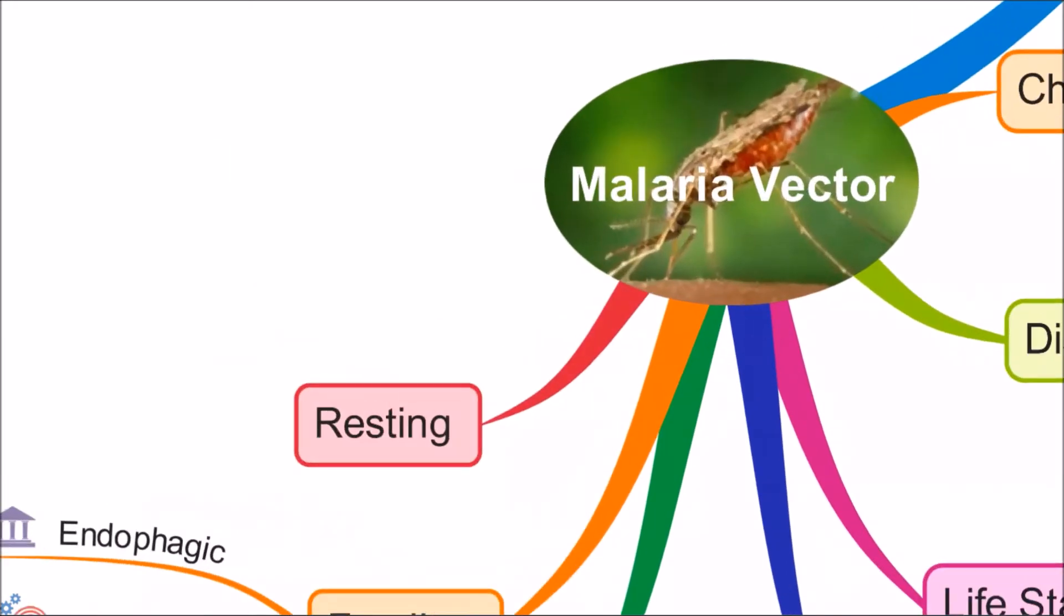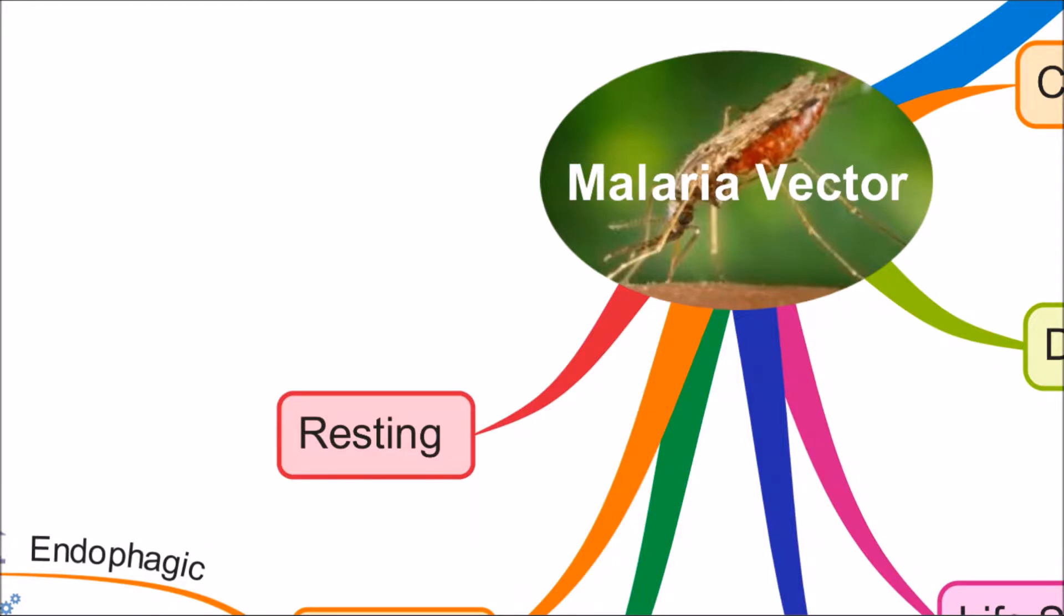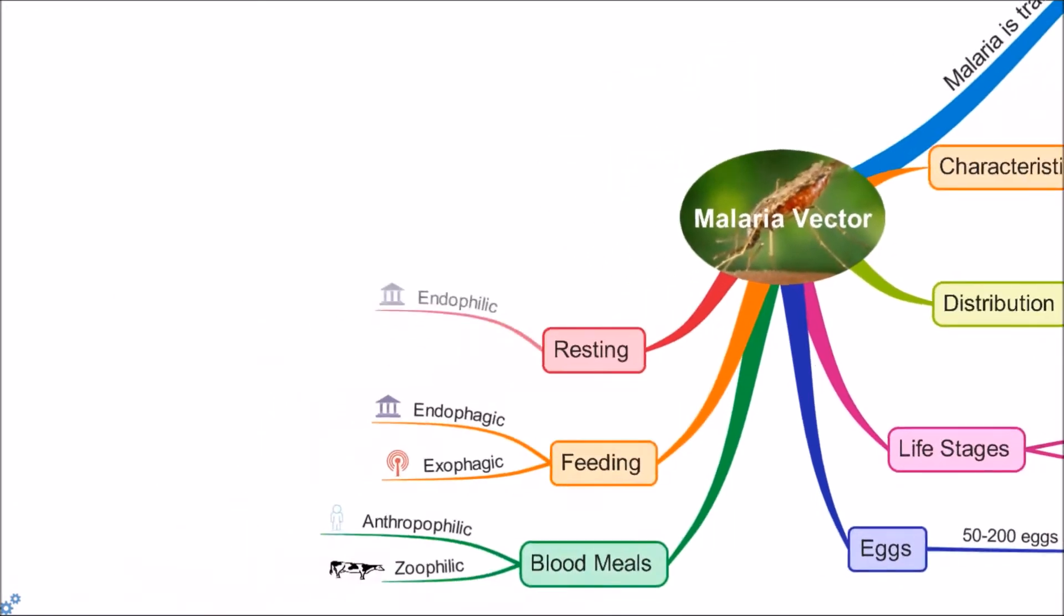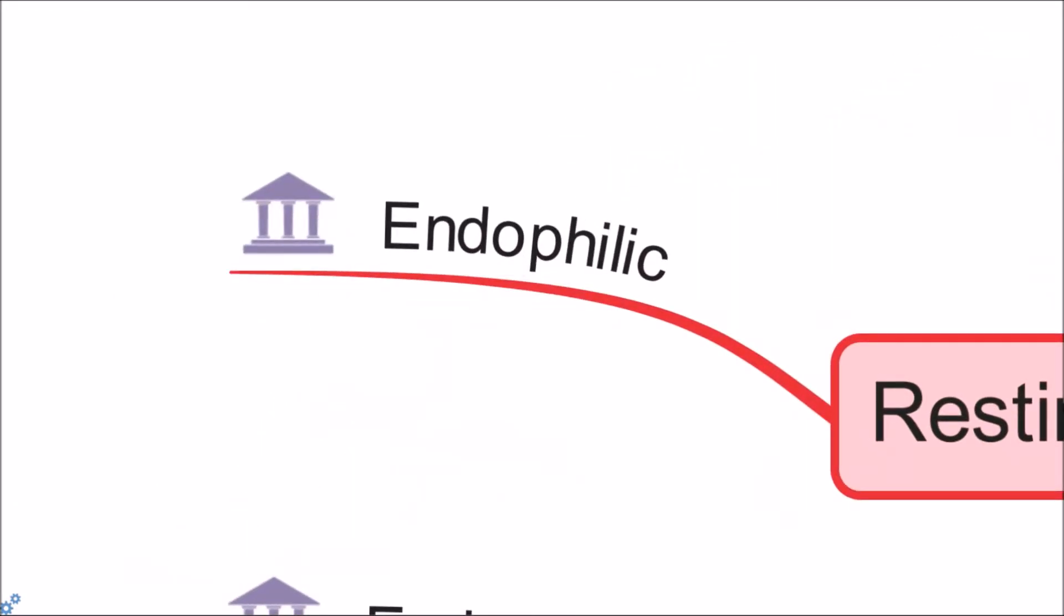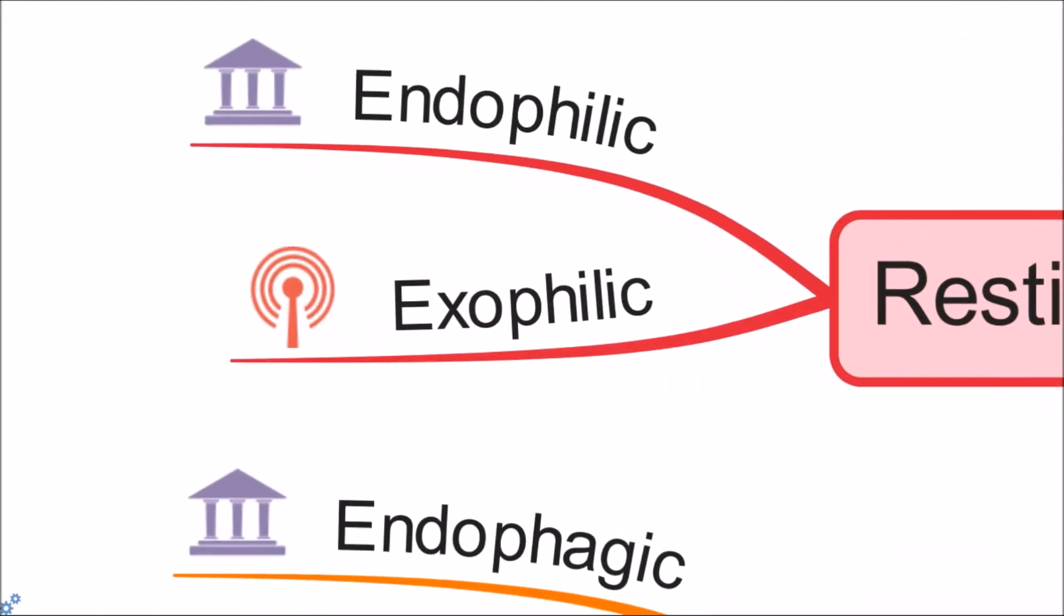After blood feeding, some Anopheles mosquitoes prefer to rest indoors, that's called endophilic, while others rest outdoors, called exophilic.